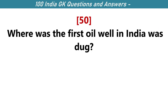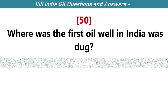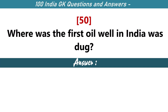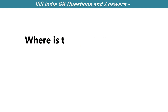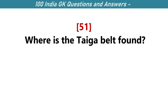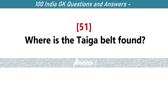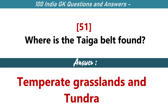Where was the first oil well in India dug? Digboi, Assam. Where is the taiga belt found? Between temperate grassland and tundra.